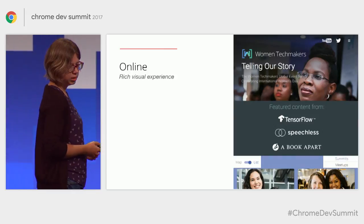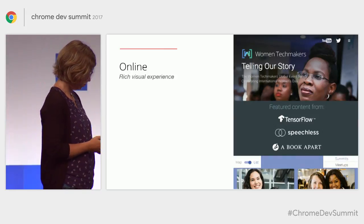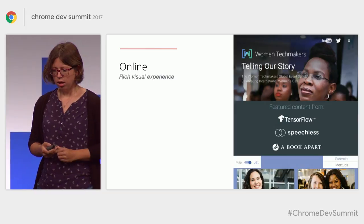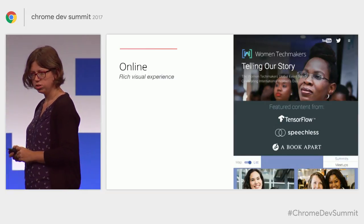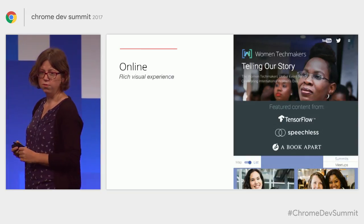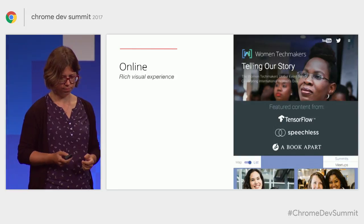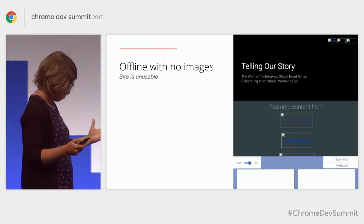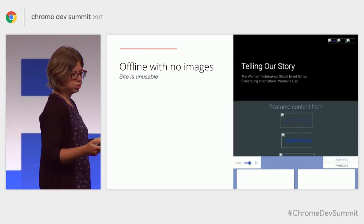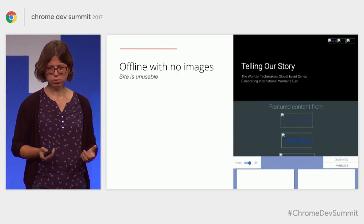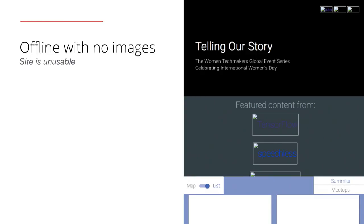Let's go back to the WomenTechMakers example. The site is a beautiful site with a rich visual experience and lots of imagery. If I wanted to save all of this for offline use, it would be very, very heavy. So maybe I don't need all of those images — maybe I just save the HTML. But that's how the page looks without images: it looks ugly and it's totally unusable, because the user can't even navigate through the page since the buttons are gone. So how do we decide between these two extreme points what to cache and when?